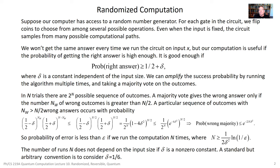Nevertheless, the randomized model can be useful if it gives the right answer most of the time — if with some probability greater than one-half by some non-zero constant delta that doesn't depend on the size of the input, I get the right answer. Although in a given run I might not be confident, I can run multiple times and take a majority vote on the outcomes to decide whether the answer is yes or no. If I run a sufficient number of times, it will be unlikely that the majority of the time I got the wrong answer, so we can amplify the probability of getting the right answer to something very close to one.